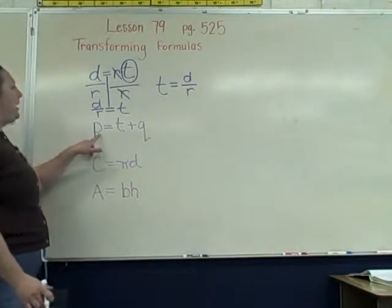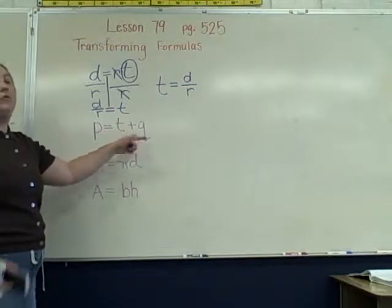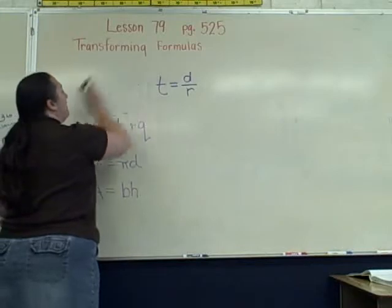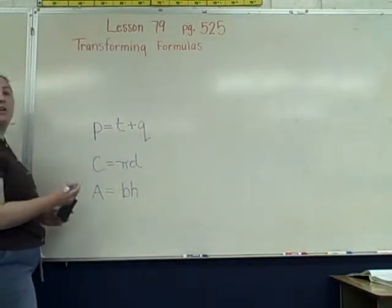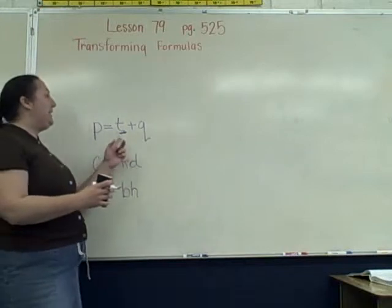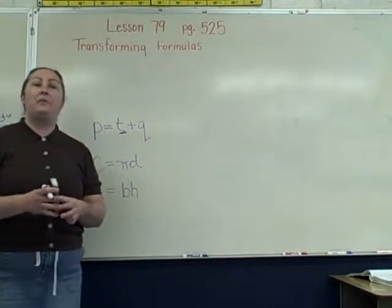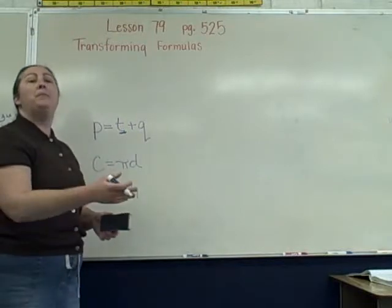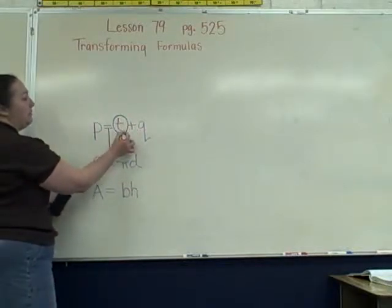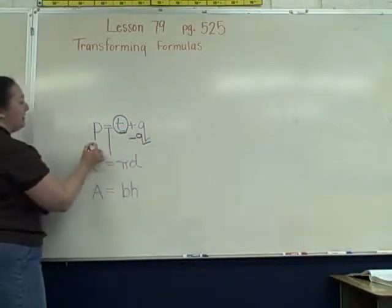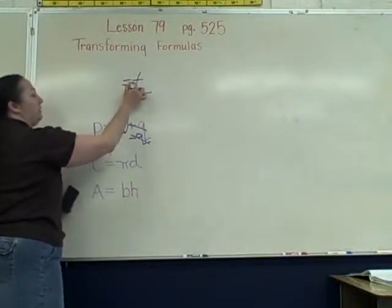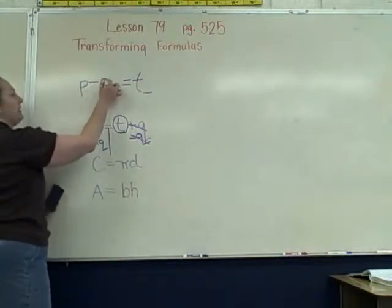The second example is p equals t plus q — random variables. Here we have addition as the operation. To get t by itself, I identify the operation as addition and use the opposite, which is subtraction. I split it at the equal sign, identify my variable, and subtract q from both sides.